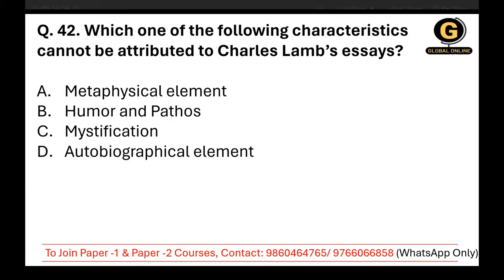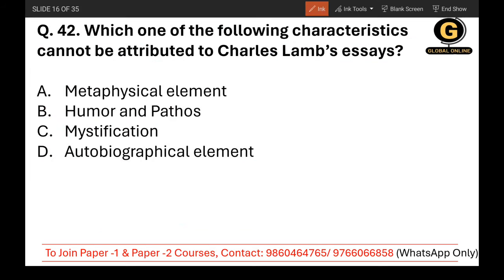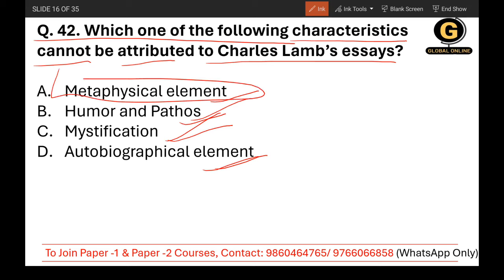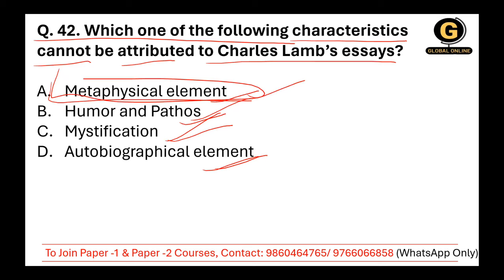Question 42: Which one of the following characteristics cannot be attributed to Charles Lamb's essays? The options are metaphysical element, humor and pathos, mystification, and autobiographical element. You will find autobiographical element, mystification, and humor and pathos in Charles Lamb's essays — but not the metaphysical element. So the correct answer is A, metaphysical element.